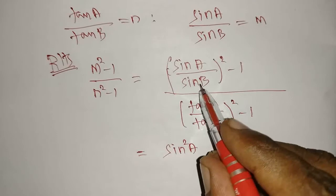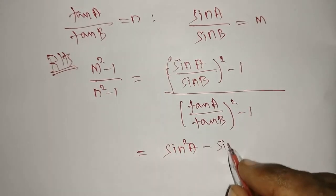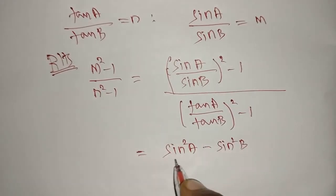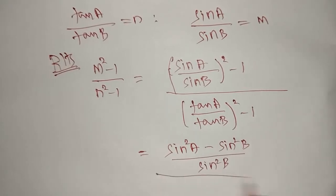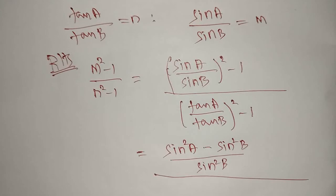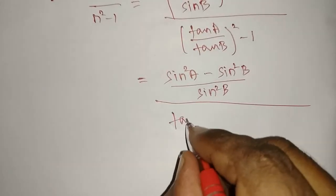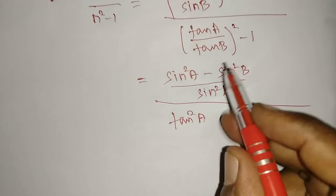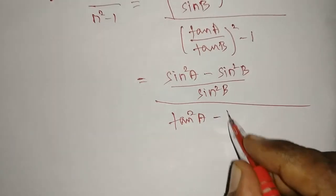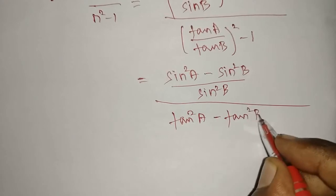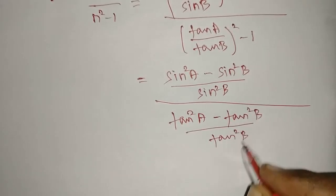Taking cross multiples, in the numerator you get sin²A minus sin²B, divided by sin²B. In the denominator, the same process: you get tan²A minus tan²B, divided by tan²B. So we now have these two fractions.